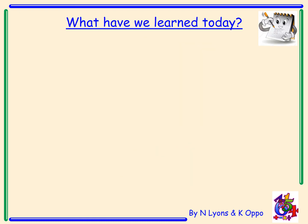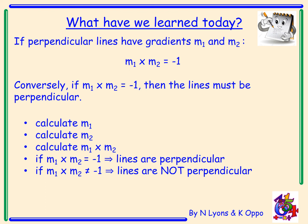So what have we learned today? If perpendicular lines have gradients m1 and m2, then m1 times m2 must equal minus 1. Conversely, if m1 times m2 does equal minus 1, then the lines must be perpendicular to each other.